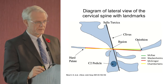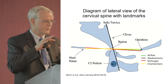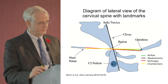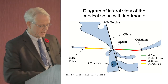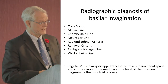Just briefly — because Dr. Henderson will talk more about this — when you see five or six different measurement strategies all trying to make one diagnosis of instability, you know that no single system is good enough. Lines such as McCray, Wackenheim's, McGregor, and Chamberlain's are all used to help understand when there's a problem at the base of the skull requiring neurosurgical attention.